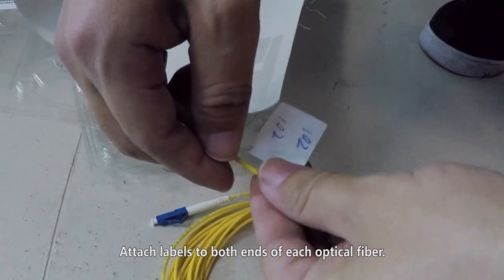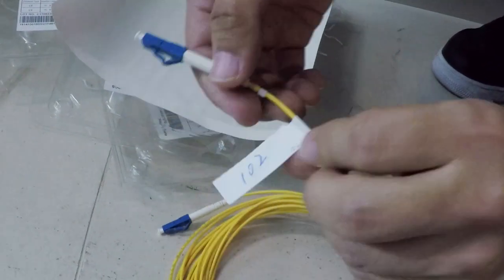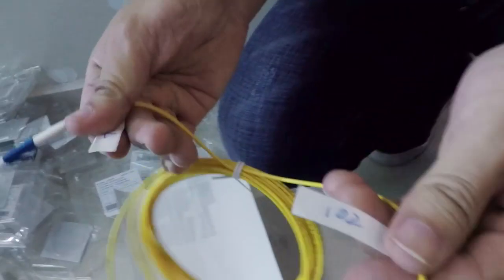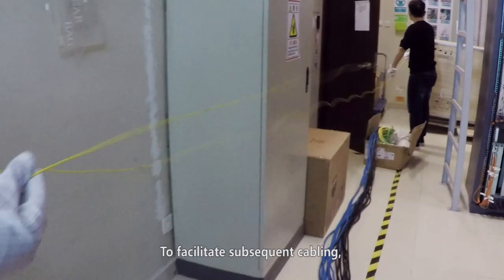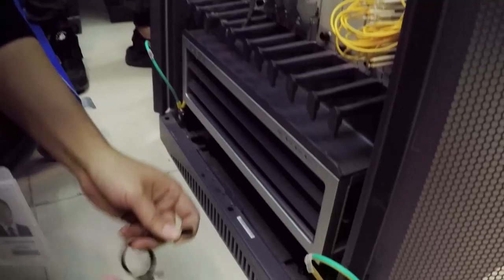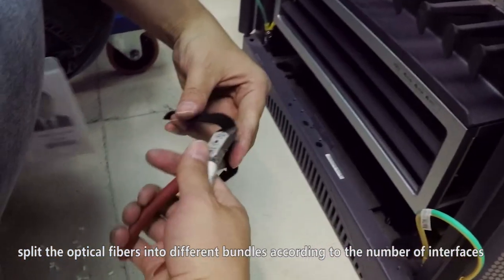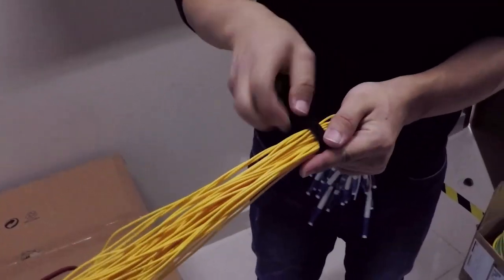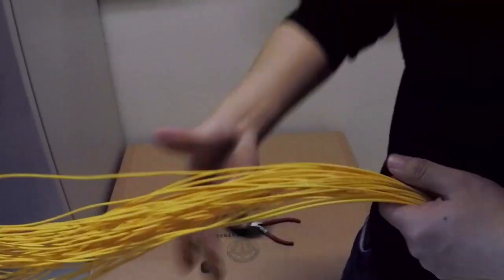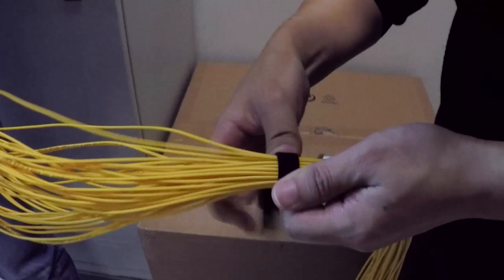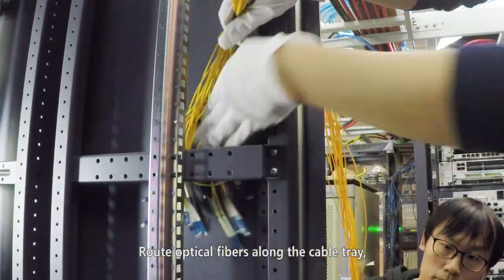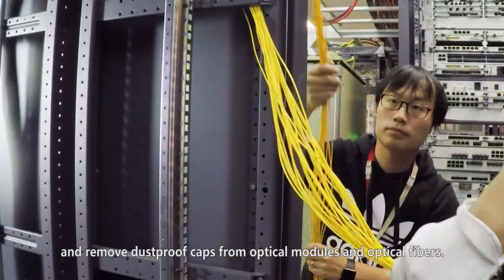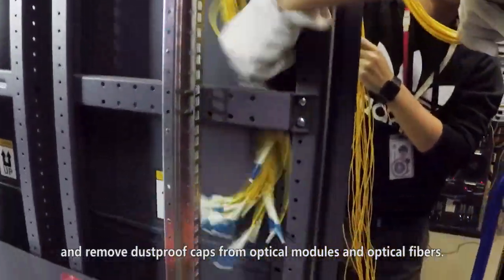Attach labels to both ends of each optical fiber. To facilitate subsequent cabling, split the optical fibers into different bundles according to the number of interfaces and bundle them with binding tape. Route optical fibers along the cable tray and remove dust-proof caps from optical modules and optical fibers.